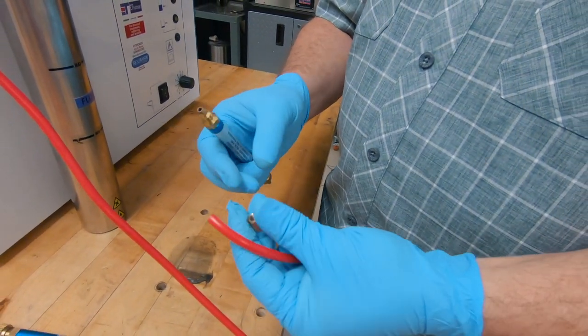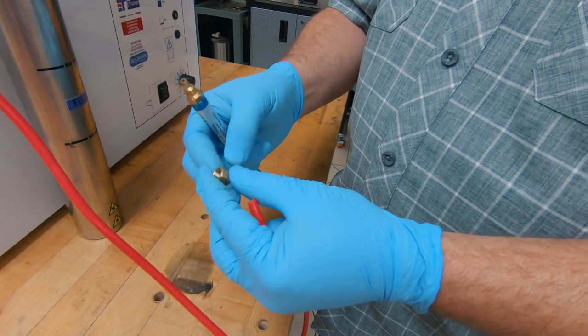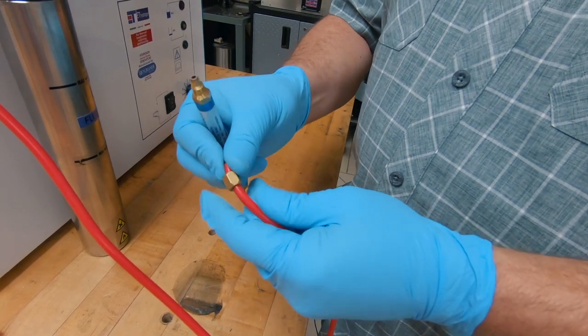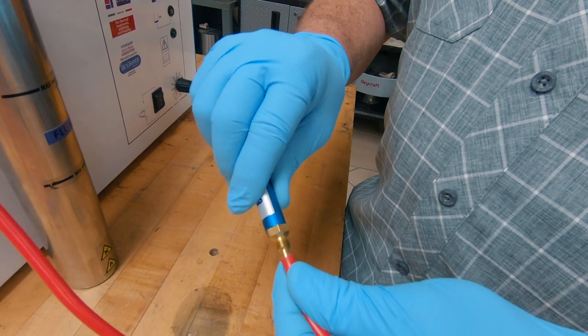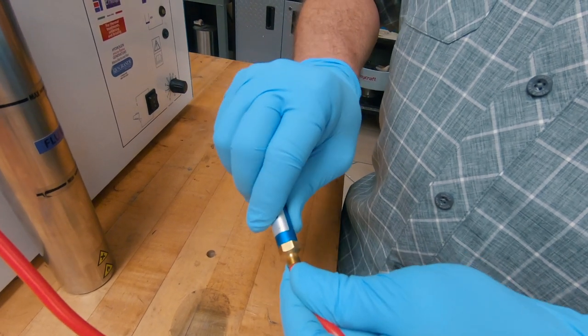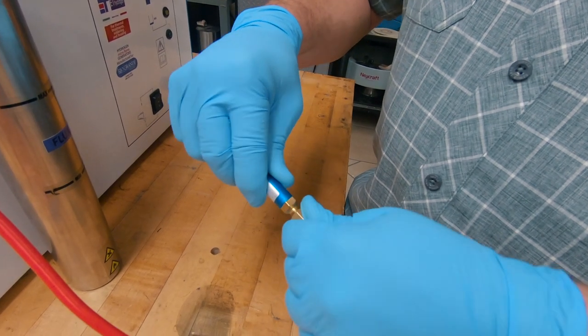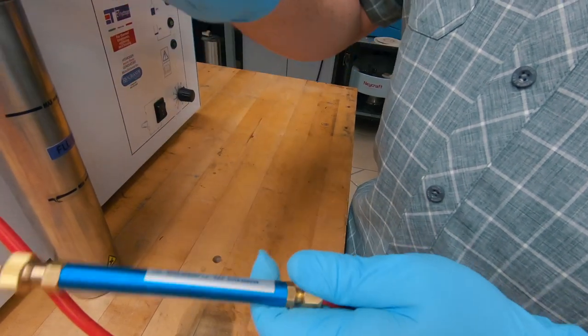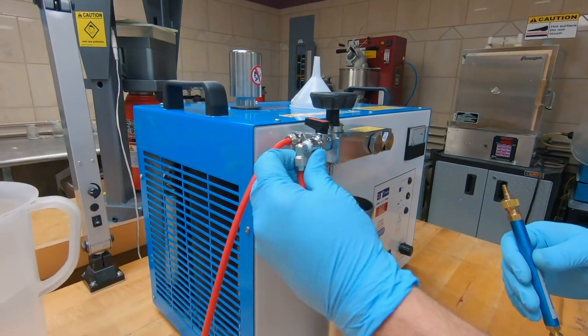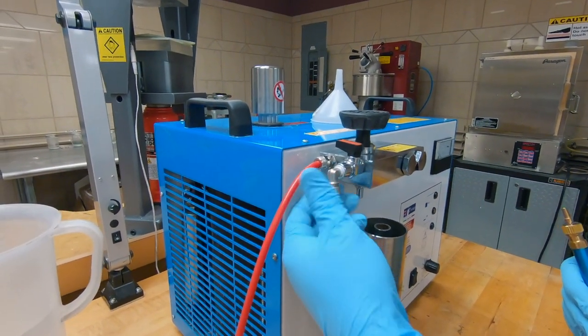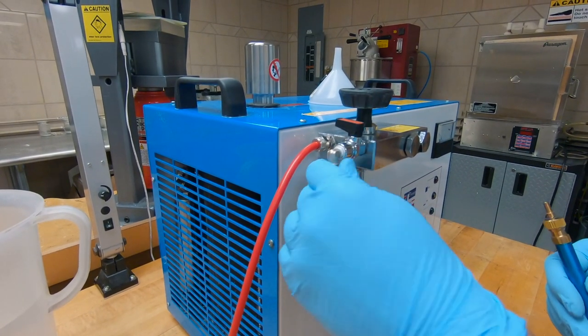Attaching the hoses is really easy. It comes with a little collet. You put that on the hose. You shove the hose over the barbed fitting on the bottom of the torch and then you screw that tight. Attaching it to the machine is the same thing. It has the same type of nut and you attach it to the machine in the same manner.